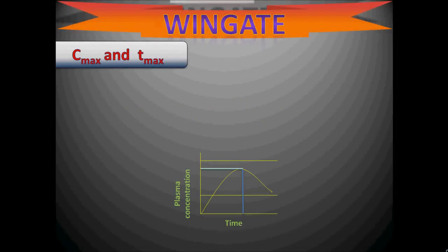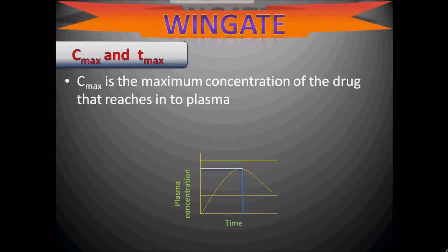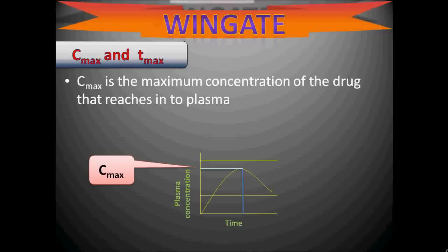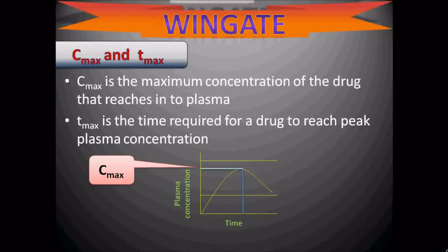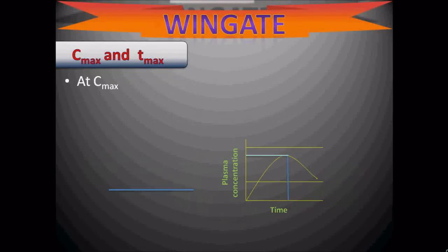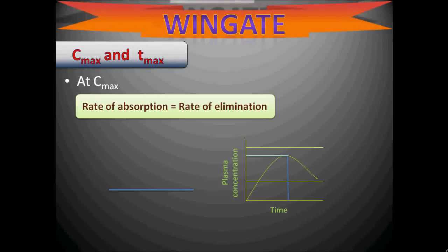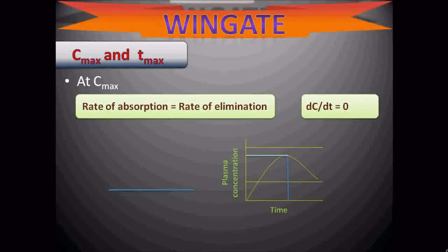Cmax is the maximum concentration of the drug that reaches into the plasma after administration — the peak plasma concentration. Tmax is the time required for a drug to reach that peak plasma concentration. At Cmax, the rate of absorption is equal to the rate of elimination, which is why the curve shows a plateau phase. Hence, dC/dT — the change in plasma drug concentration with respect to time — is equal to zero.